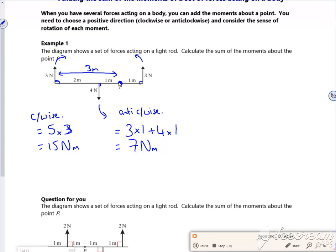Now this one's the sum. So I've got a choice. I can see what acts clockwise or see how it acts anticlockwise. So if I do 15 take away seven, so 15 clockwise take away seven anticlockwise, it's going to give me eight newton meters acting clockwise.